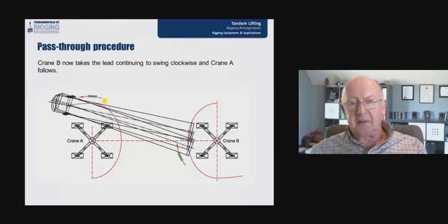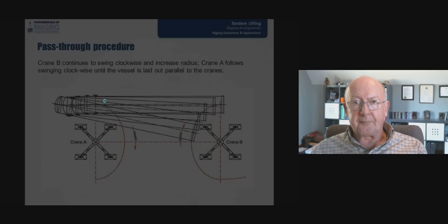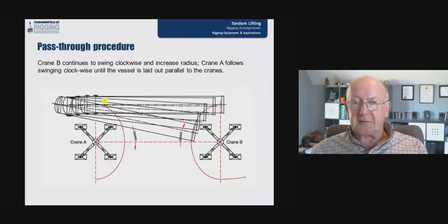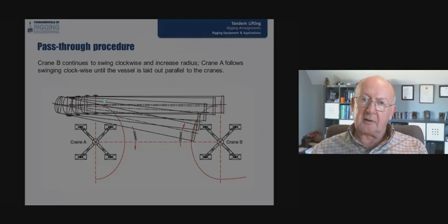So here we see it, crane B is now taking the lead, and continues to swing clockwise, while crane A follows. Crane B continues to swing clockwise and increase radius, crane A follows swinging clockwise, until the vessel is now laid out parallel to the cranes.